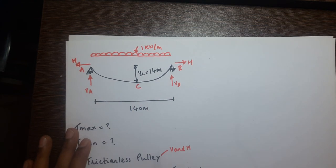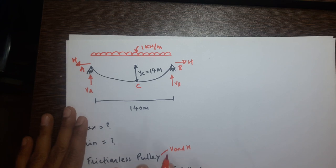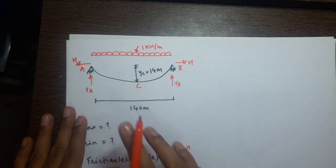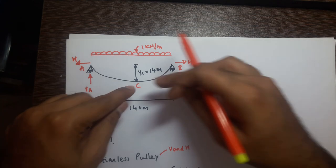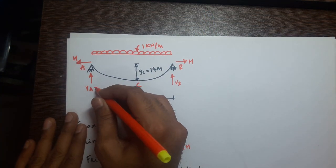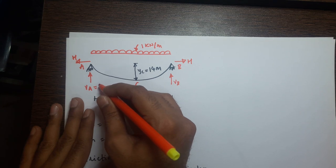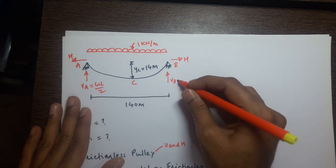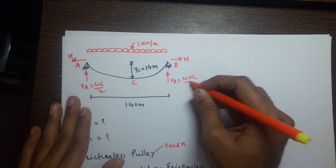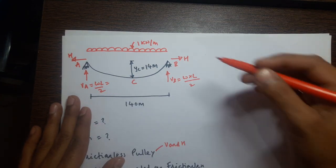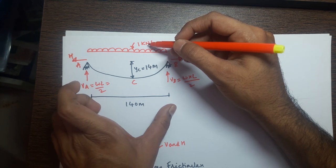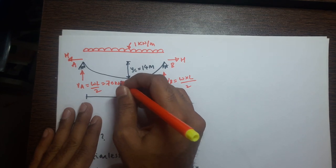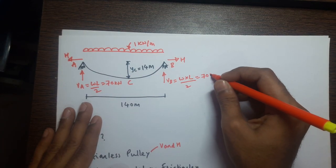The cable is symmetric and loading is symmetric. The vertical reaction equals total load divided by 2. So V_A = W × L / 2 = 1 × 140 / 2 = 70 kilonewtons. V_B is also equal to 70 kilonewtons.